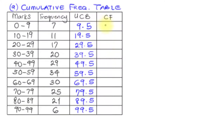How do we get the cumulative frequency? For the first set of marks, the cumulative frequency will also be the frequency. So here we have 7. But for subsequent ones, we add the initial cumulative frequency to the next frequency. The cumulative frequency initially is 7, then plus this frequency: 7 plus 11 equals 18. Then here it will be 18 plus 17. That's why you call it cumulative — you continue to add each subsequent frequency to the cumulative gotten before.